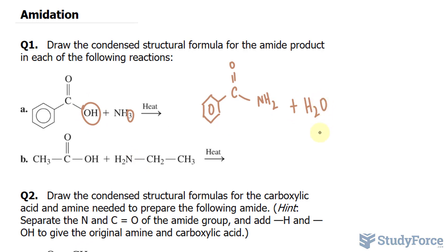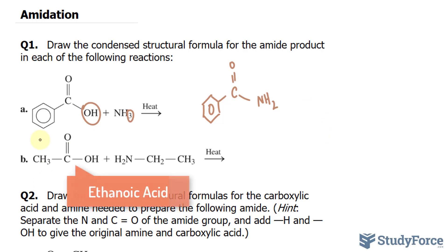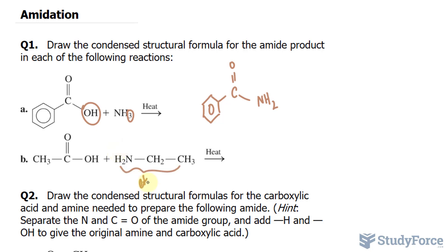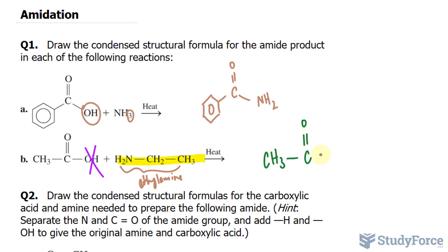In question B, we have the following organic compound. As you can see, we have a carboxyl group again and it's coming together with ethylamine. Just as before, this OH will be replaced with everything found here. Our product will be CH3, C double bonded to oxygen, and the rest of the molecule.